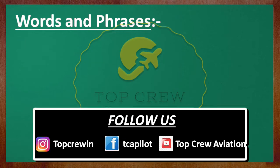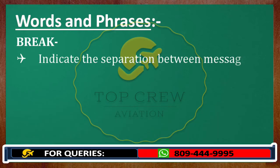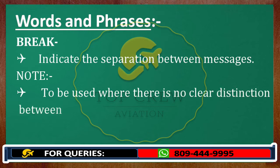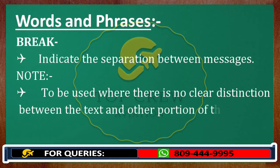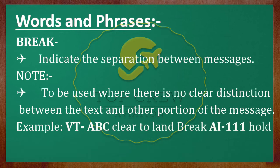Next is Break, which means indicate the separation between messages. Note: to be used where there is no clear distinction between the text and other portion of the message. For example, Victor Tango Alpha Bravo Charlie, clear to land. Break. Air India 111, hold your position. Delhi Tower.